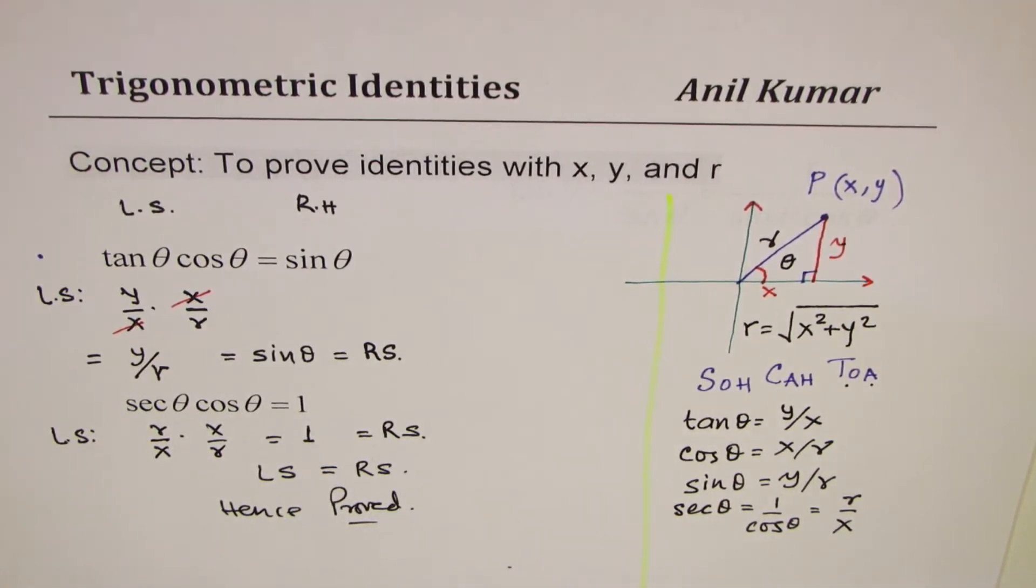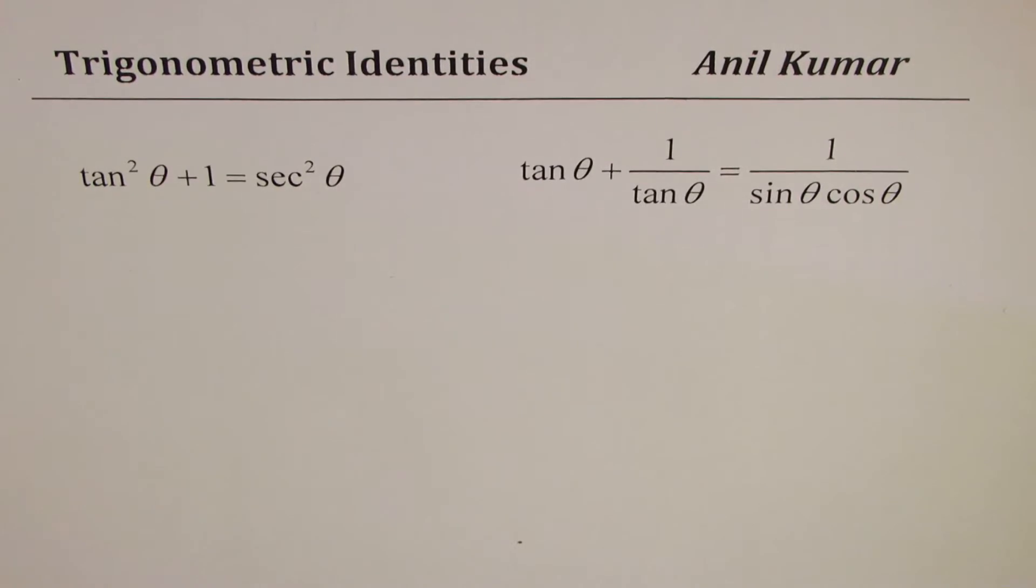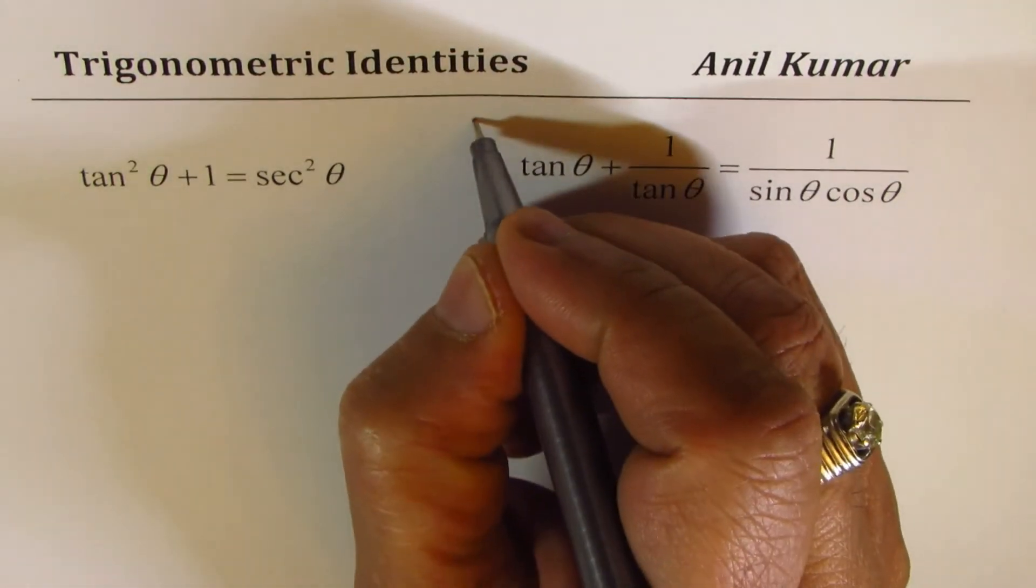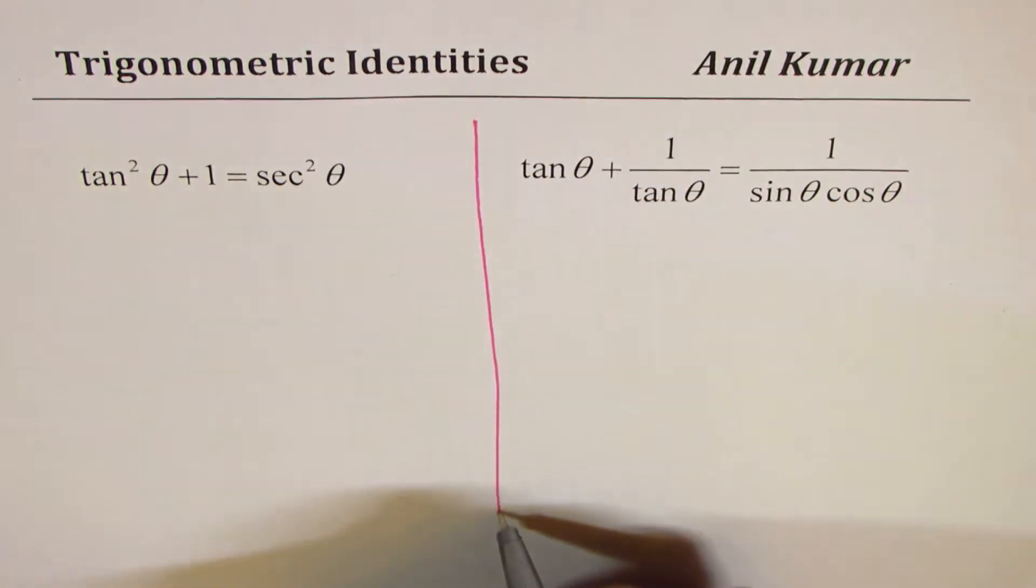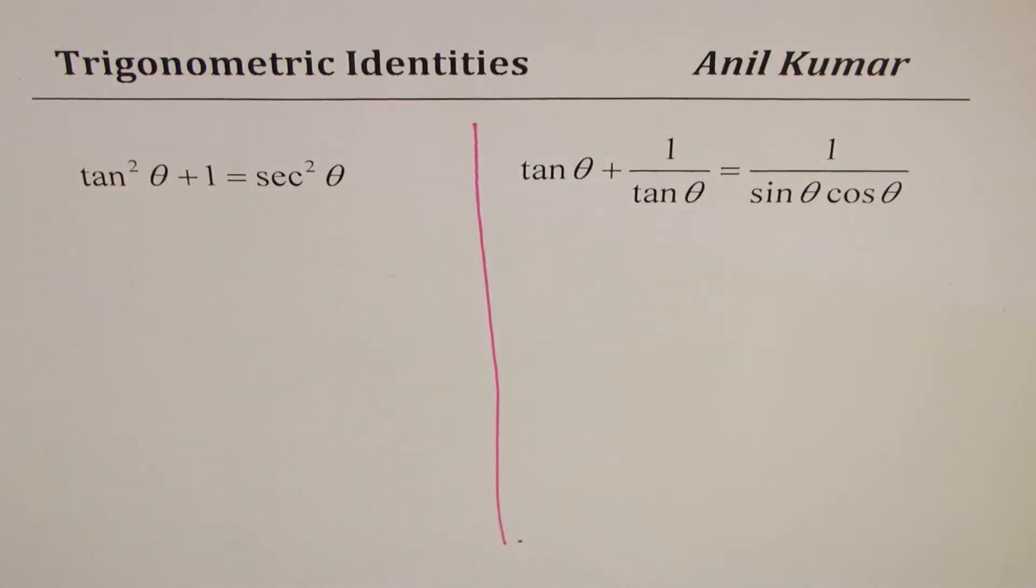Perfect. Now, let's take more examples. I'd like you to copy those questions and then solve them. Now, I would like you to take this as a test. There are two identities which you should be in a position to prove using x, y, and r.